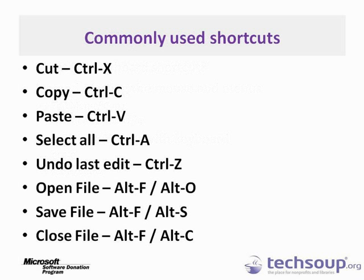Here are some commonly used shortcuts. The most common editing commands are Cut, Copy, and Paste — set up as Ctrl+X, Ctrl+C, and Ctrl+V. Another very useful one in Excel is Select All, which is Ctrl+A — that selects every cell on your sheet. Undo the last operation is Ctrl+Z. For file operations: Open, Save, and Close are Alt+F Alt+O, Alt+F Alt+S, and Alt+F Alt+C. They try to use letters that make sense — Alt+F for File, then O, S, and C for Open, Save, and Close.